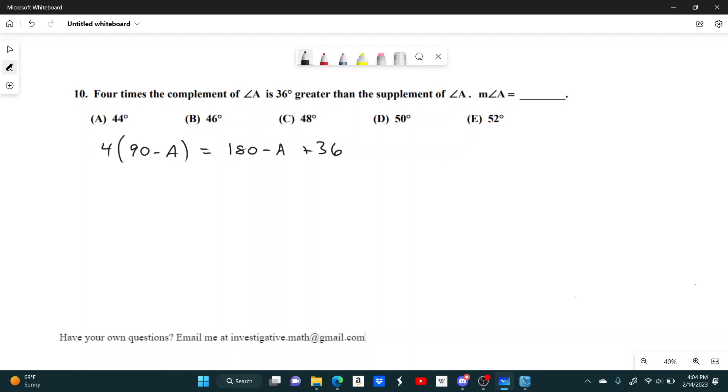From here, we just have this algebraic equation. All we have to do is solve for A. So 360 minus 4A equals 180 minus A plus 36.